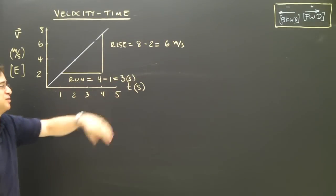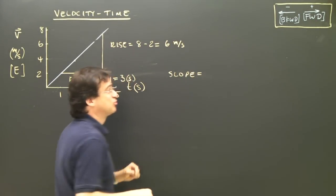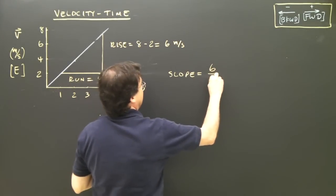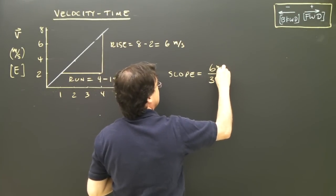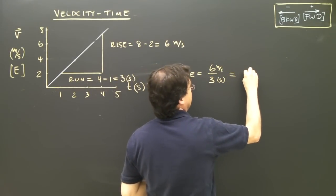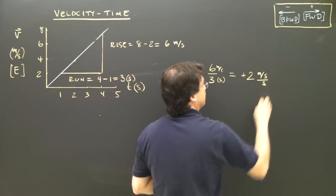So I've got my rise, 6 meters per second, my run is 3 seconds. So the slope equals rise over run, so it's 6 divided by 3, and that was meters per second and seconds there. So that ends up being, the slope is 6 divided by 3 is positive 2 meters per second per second.